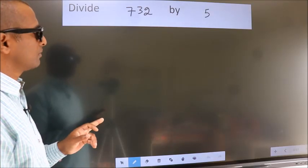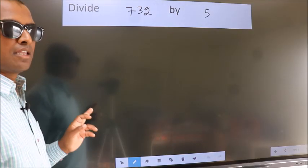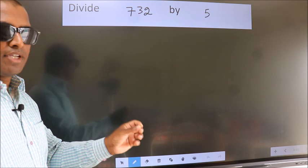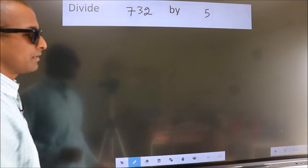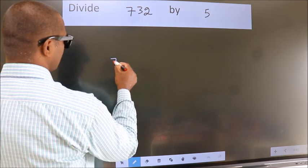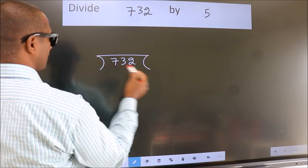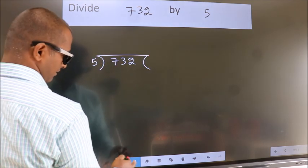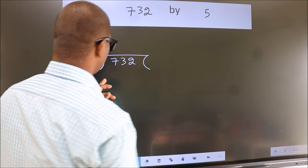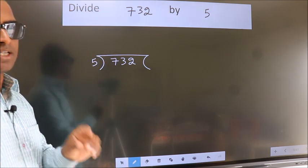Divide 732 by 5. To do this division, we should frame it in this way: 732 here, 5 here. This is your step 1.